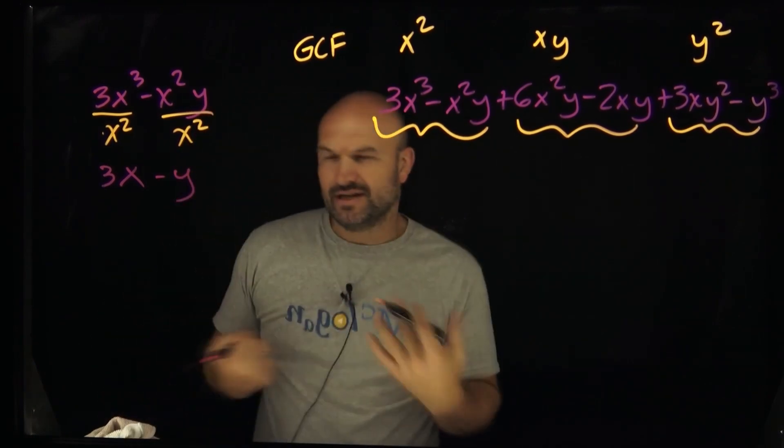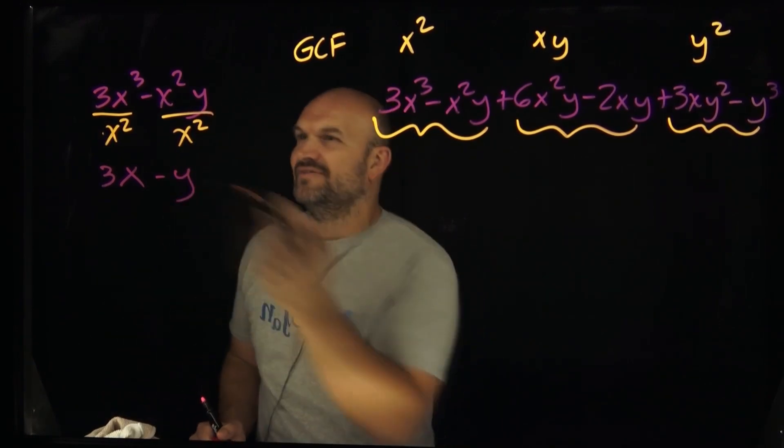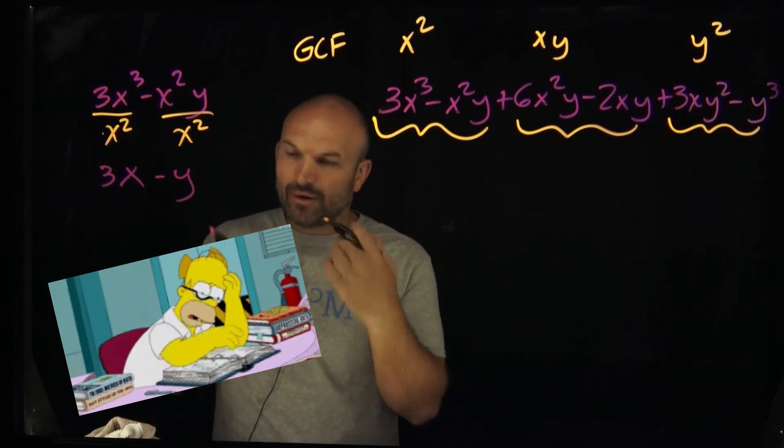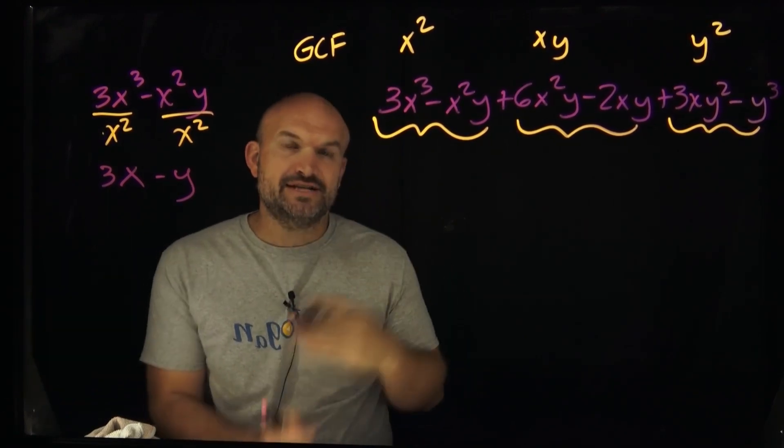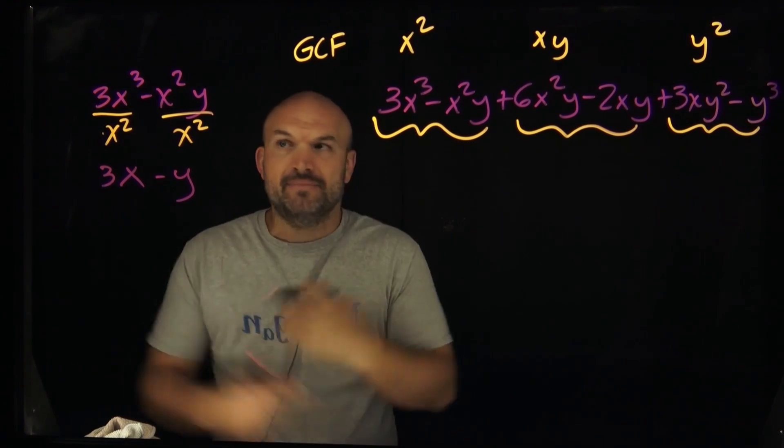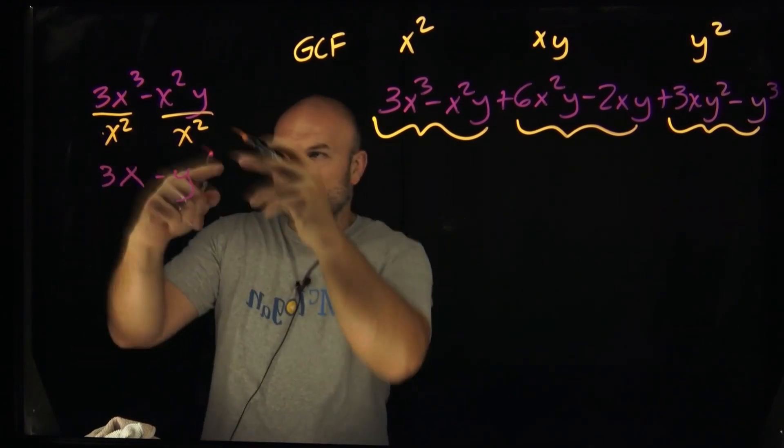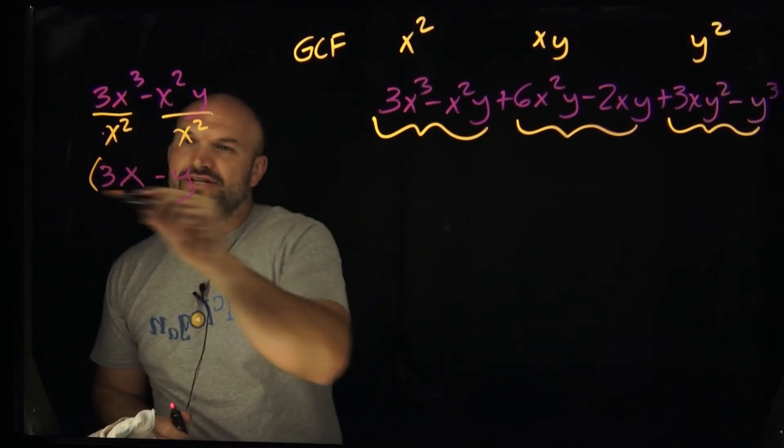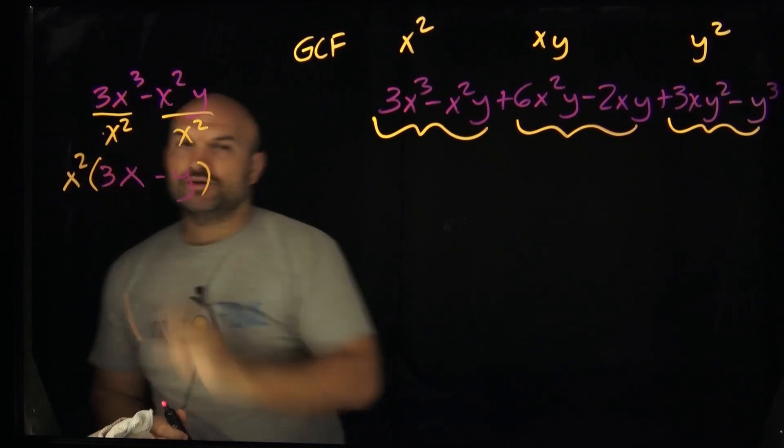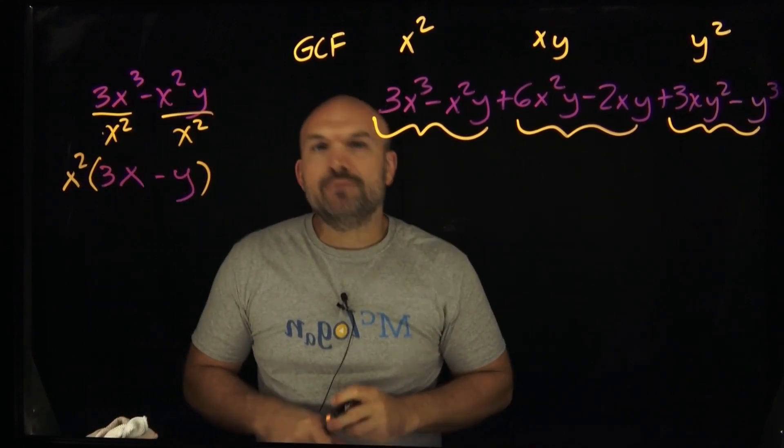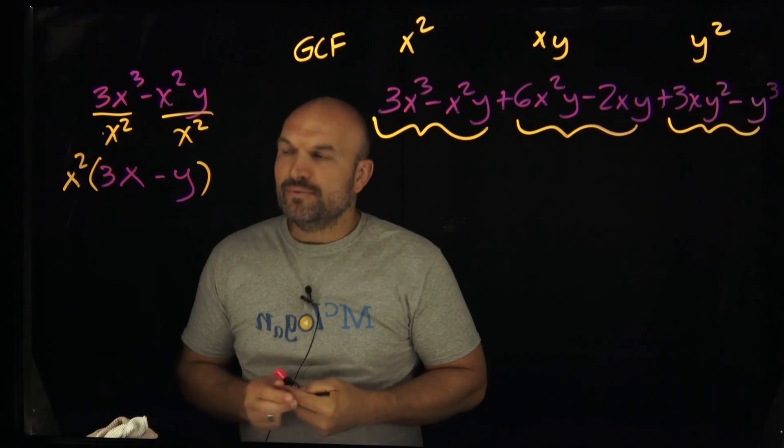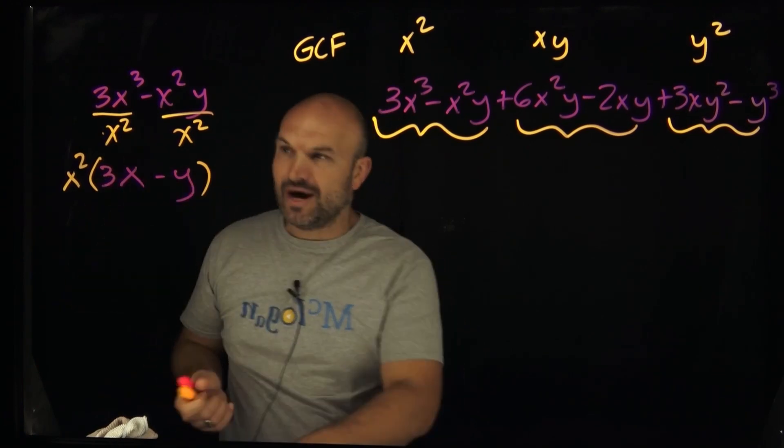Now, a lot of times students will get confused here and you're like, all right, well, you just divide it out. Like, where does the x squared go? Well, what we're doing is, remember, we're factoring or the purpose of factoring is to rewrite an expression as a multiplication problem. So when we divide this term out by x squared, what we're simply going to do is rewrite it as a multiplication problem.